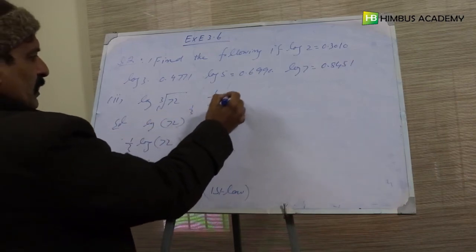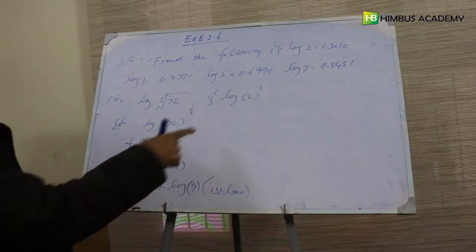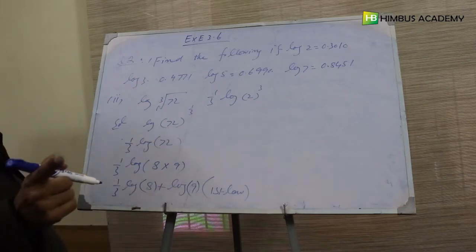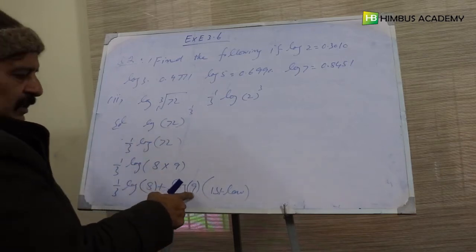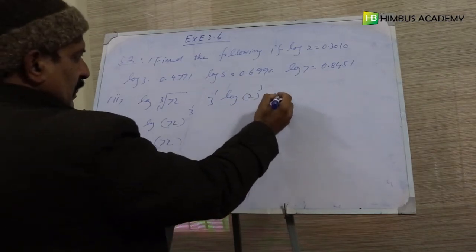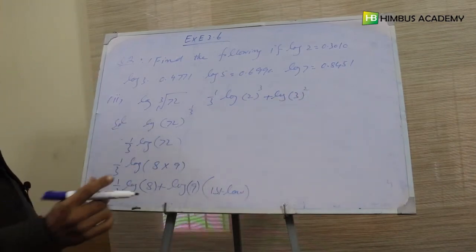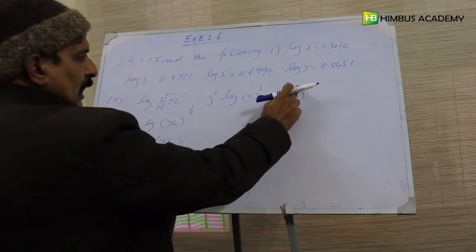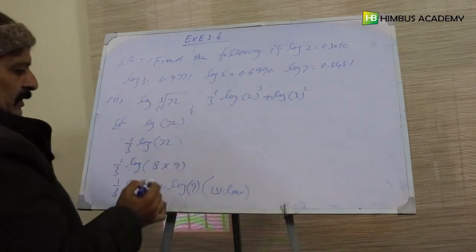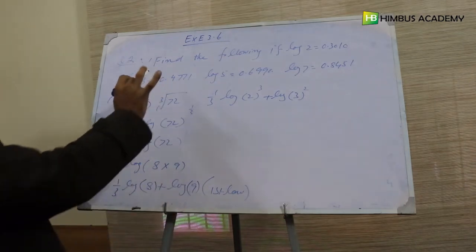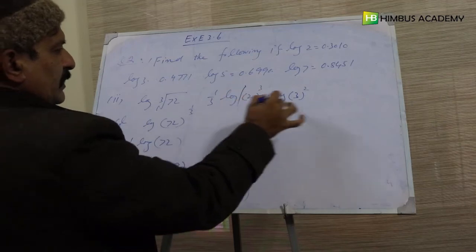8 کو 2 cube لکھ سکتے ہیں: 2×2=4، 4×2=8۔ اور log of 9 کو plus log 3 square لکھ سکتے ہیں، کیونکہ 3×3=9۔ ہم یہ اس لیے کرتے ہیں کہ ہمارے پاس 8 اور 9 کی ویلیوز موجود نہیں، لیکن 2 اور 3 کی ویلیوز موجود ہیں۔